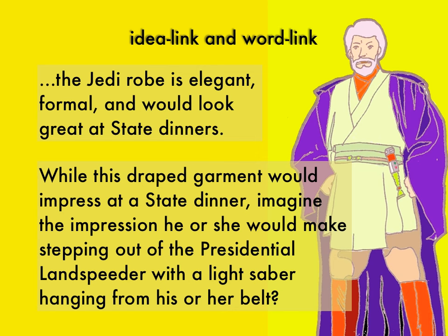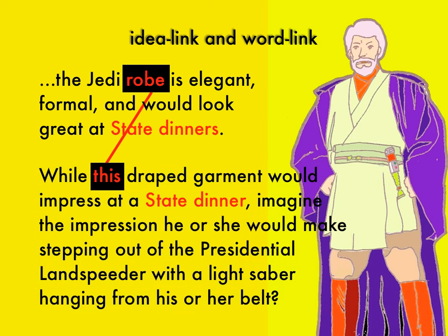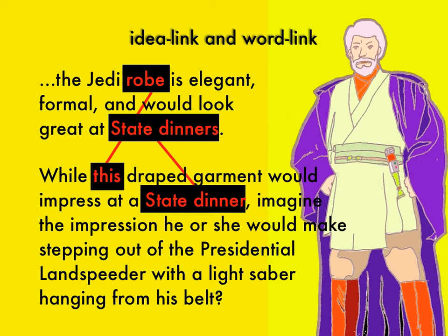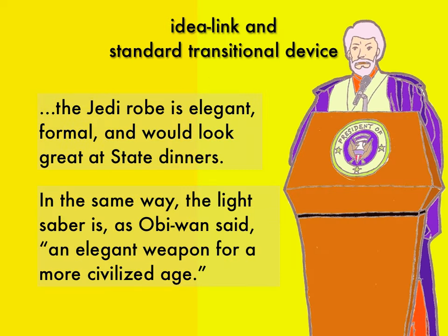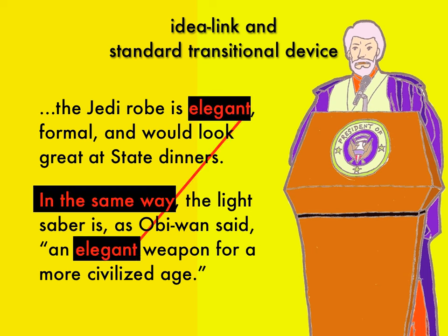If you want to show off a little, you could do two at the same time — connect two paragraphs with both an idea link and a word link. 'The Jedi robe is elegant, formal, and would look great at state dinners. While this draped garment would impress at a state dinner, imagine the impression he or she would make stepping out of the presidential landspeeder with a lightsaber hanging from his or her belt.' Using the word 'this' is an idea link; quoting the phrase 'state dinner' is a word link. You could also mix a standard transitional device with a word link — for example, using 'in the same way' alongside the repeated word 'elegant' makes your transition even stronger.